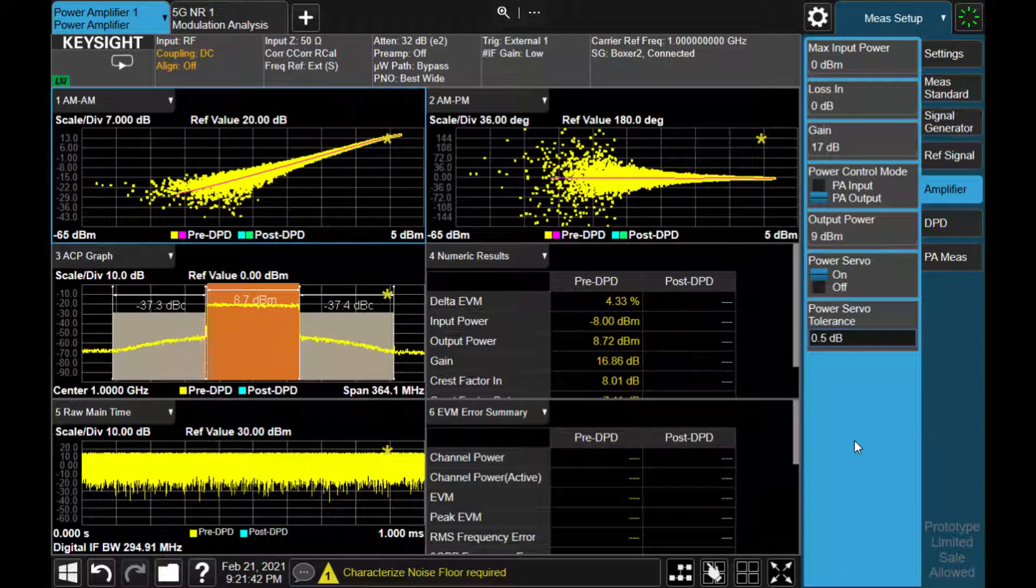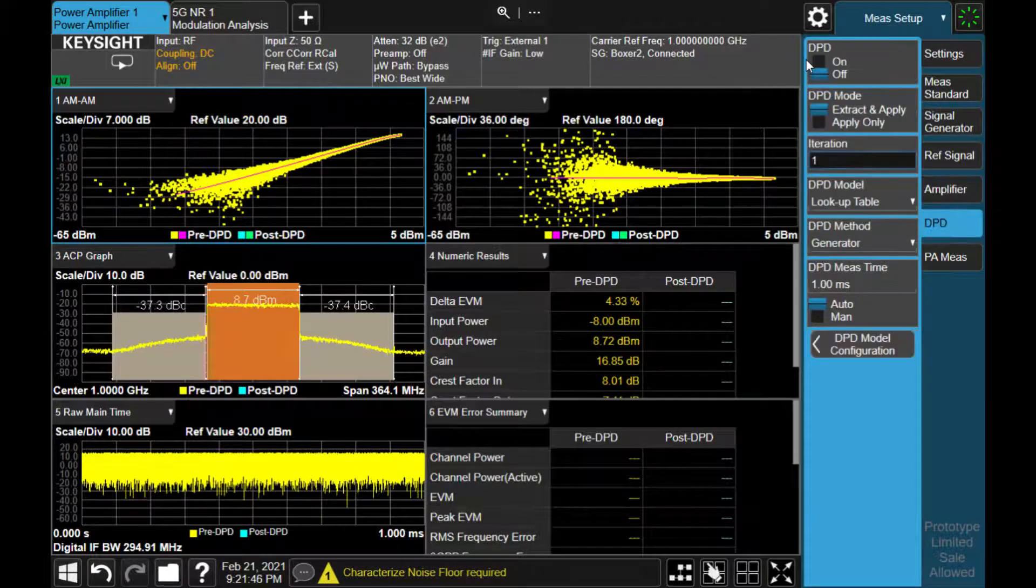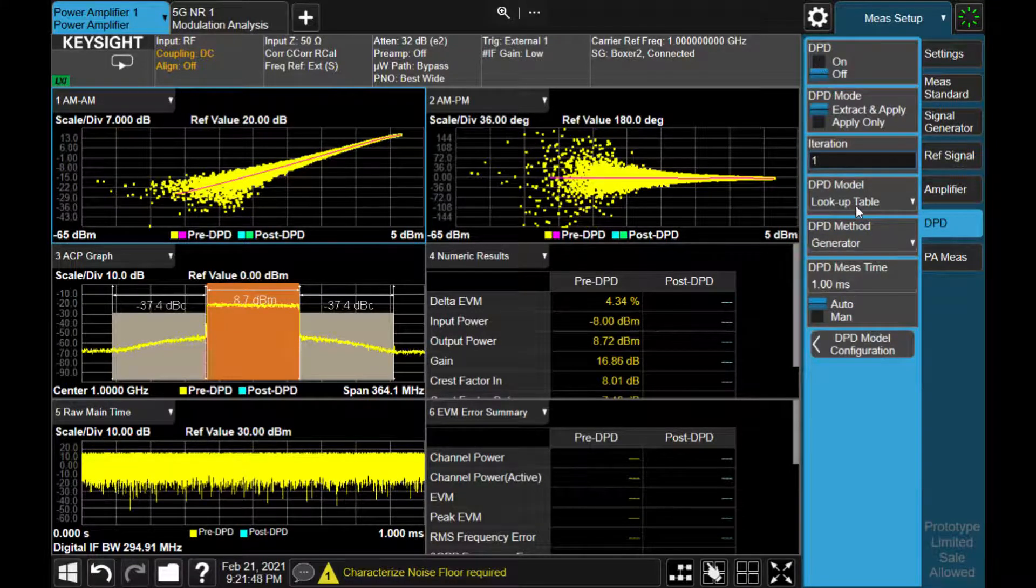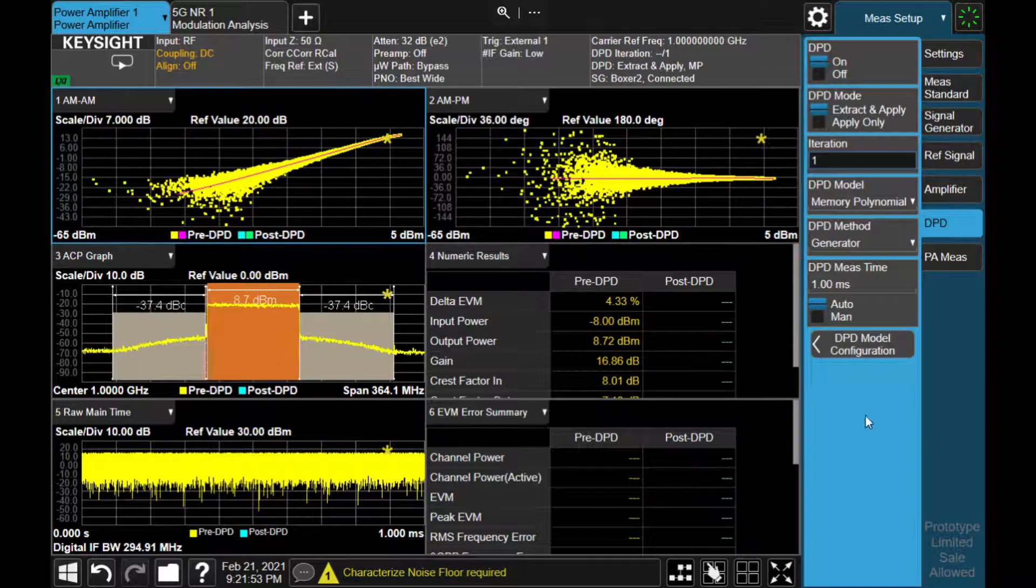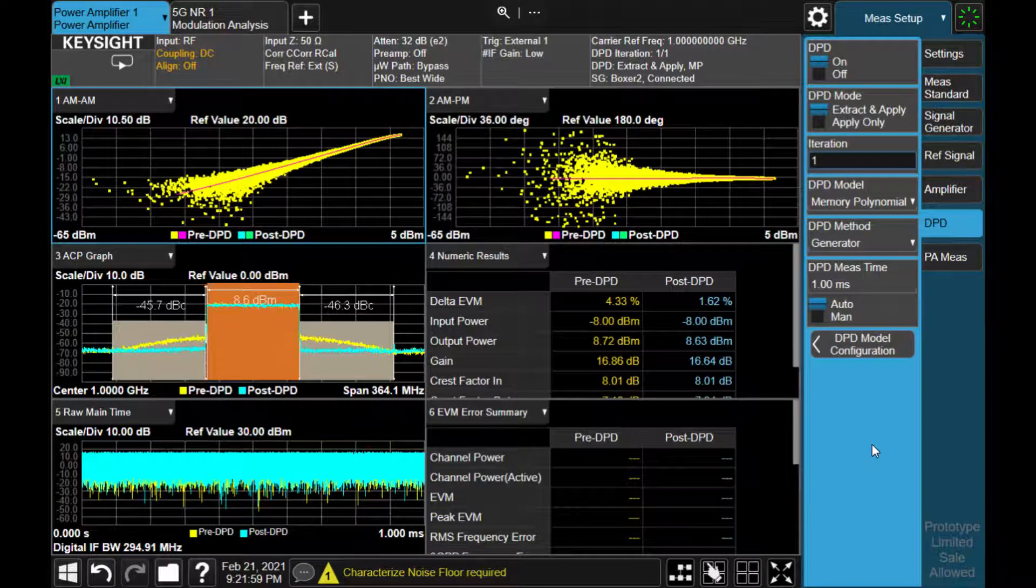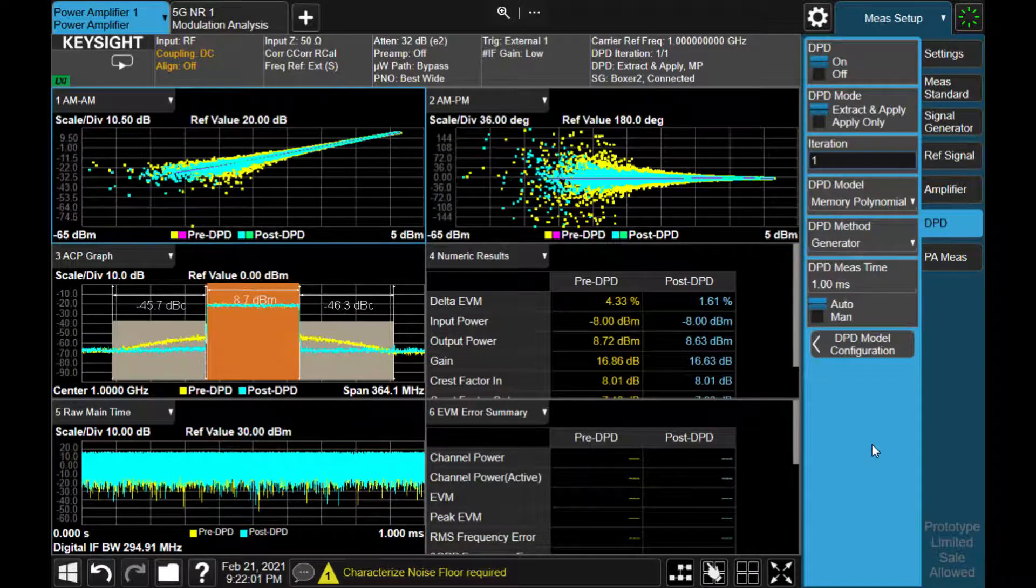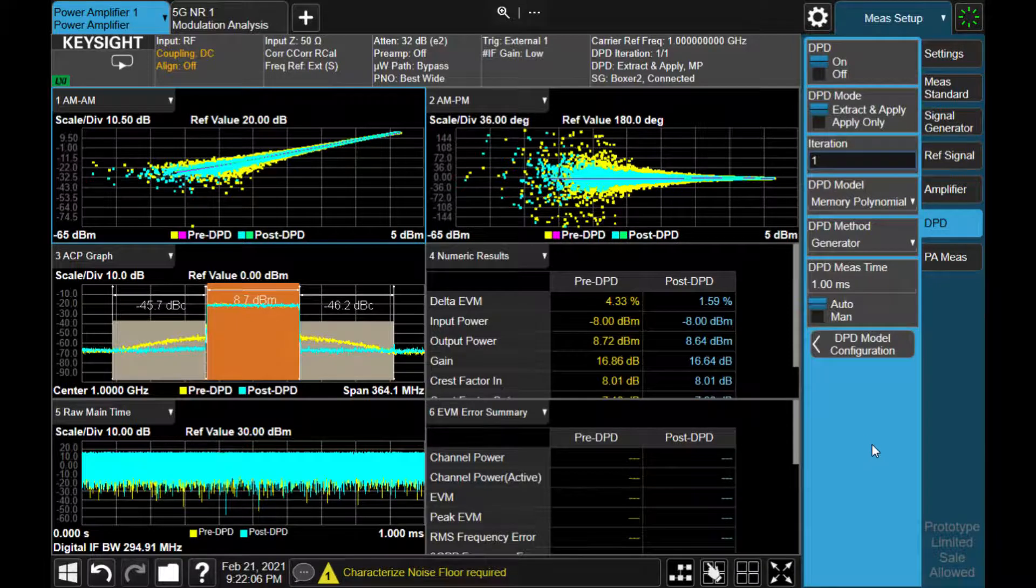Now we are ready to enable DPD. Go into DPD tab and select the DPD model. We're going to use the memory polynomial model. And then turn on the DPD. So DPD model is extracted and the VXG is now generating pre-distorted waveform. And now you can see the ACP improved minus 45.7 dBc. And so that's the impact of DPD.